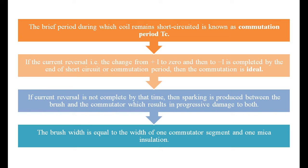If the current reversal is not complete by the time, then sparking is produced between the brush and the commutator segments, which results in progressive damage to both the commutator segments as well as the brush. Whenever there is spark progress, it will definitely affect the brush as well as the commutator segment. The brush width is equal to the width of one commutator segment - the commutator segment touching the brush is the same width. Between the commutator segments there is mica insulation that also needs to be taken care of.